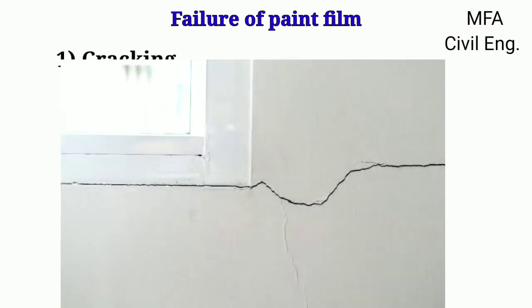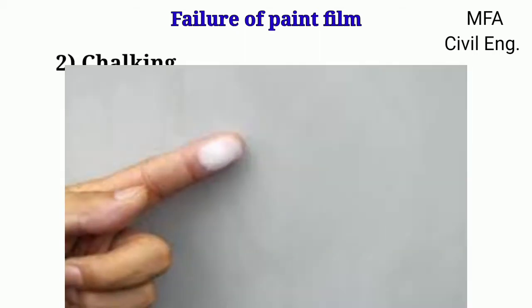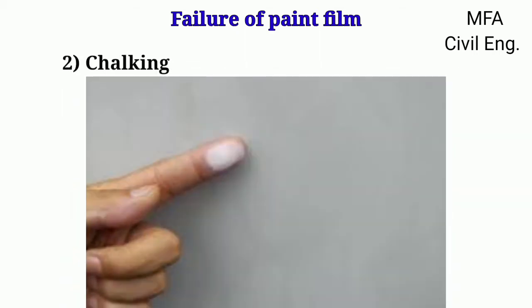The cracking of a paint film is due to the unequal expansion or contraction of different coats of paint, caused by the variation of temperature of the exposed film. This defect can be prevented by making the first coat — that is, the prime coat — a harder one.